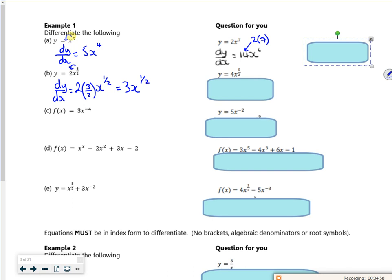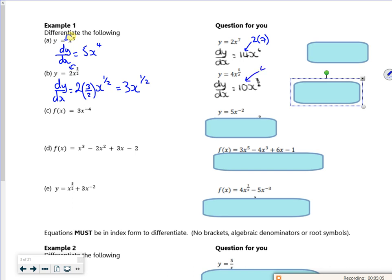And there's one there and this next one you could have a go at. So same idea, that would be 4 times by 5 over 2, which would give you the answer.